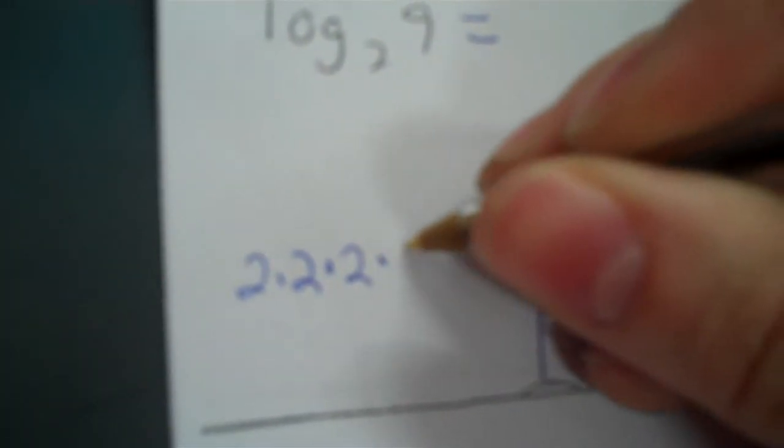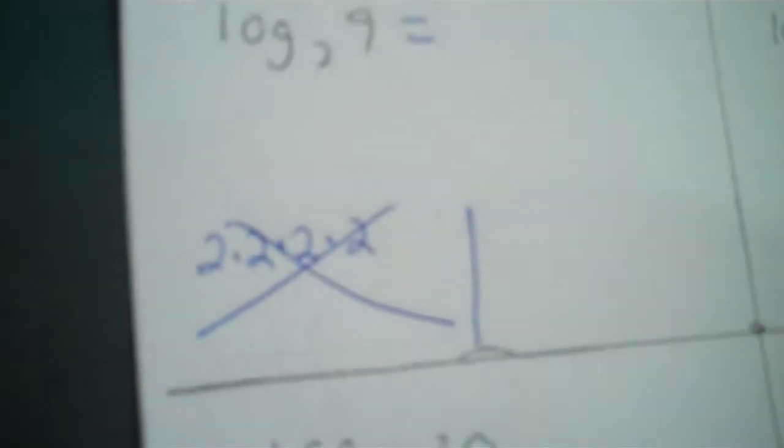I'm going to kind of separate this because there's a plan A and a plan B. We'll use plan B if plan A doesn't work. We're going to take 2's and multiply it to 9. That's 4. That's 8. That's 16. So I'm over 9. So that way isn't going to work.